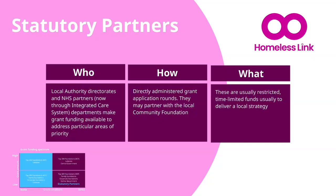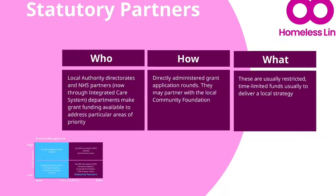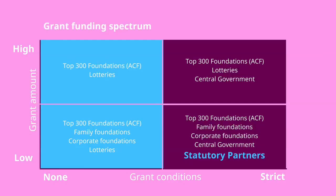We have classified statutory partners as separate to government grants, because they are usually accessed differently and for smaller amounts. These grants are made by local authority directorates, district councils, and NHS partners to address particular areas of local priority. You might have seen community chest grants or similar from your district council, or health grants from the ICS. Local or district authorities will often run their own grant process, or they might partner with a local community foundation. As with central government funds, these are usually restricted, time limited, and tied to deliver against a specific strategy, priority, or programme. The amount available is often smaller, but still with restrictions and monitoring expectations.